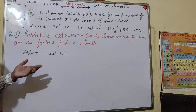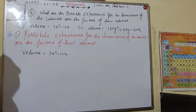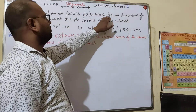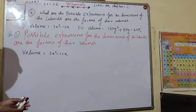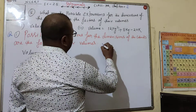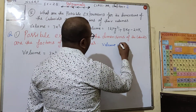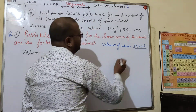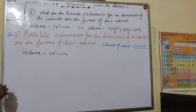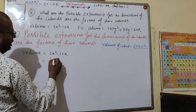This is NCERT Class 9 Chapter 2. The question asks for possible expressions for the dimensions of a cuboid given the factor of their volumes. The volume of a cuboid is L into B into H. So when we have the volume given and we factor it, the factors will be the dimensions — that means L, B, and H.